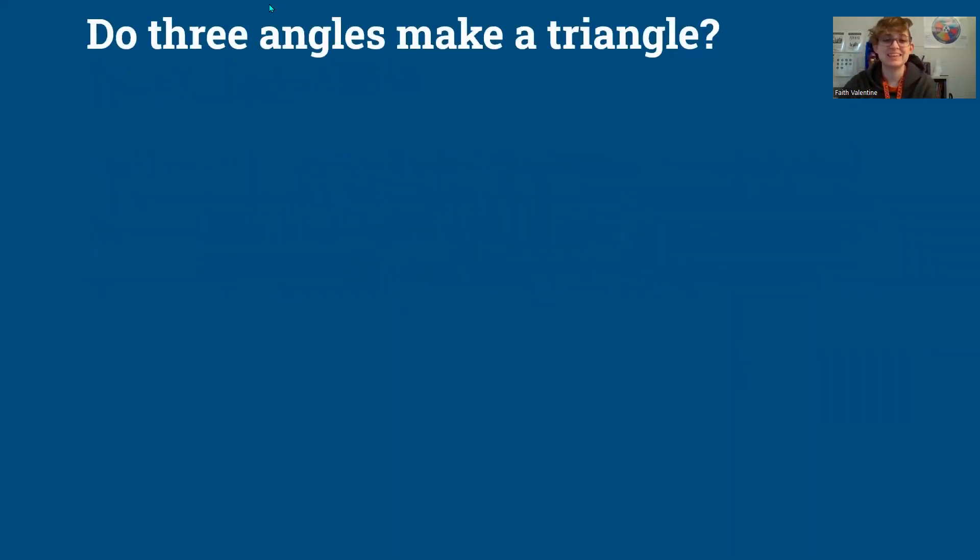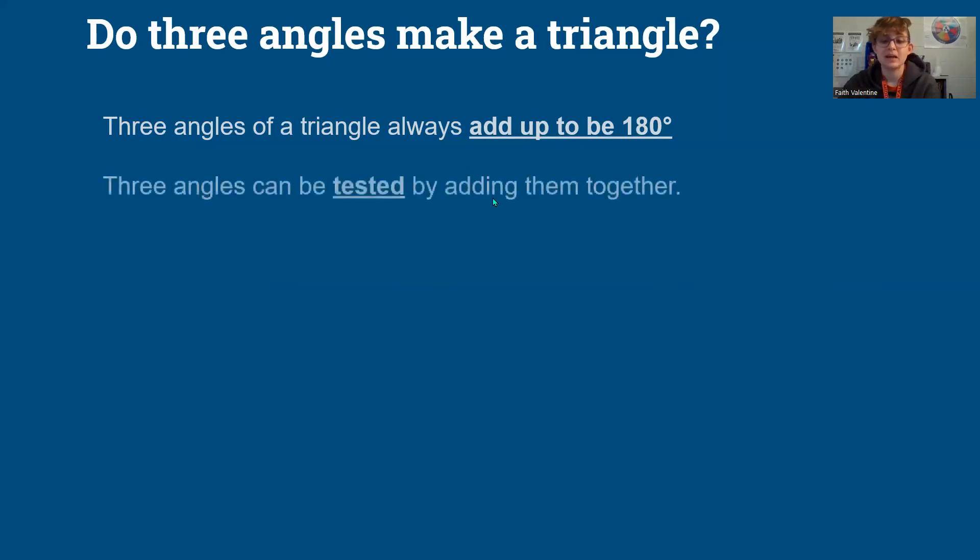And this time we're getting into triangle angles. So do any three angles we can be given make a triangle? We know, or maybe you're learning, that three angles of a triangle always add up to be 180 degrees. And we can test this by adding them together. But let's look at an example of how we know it makes 180.